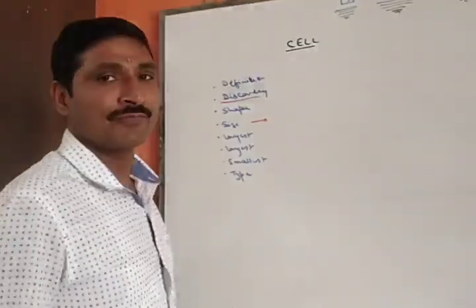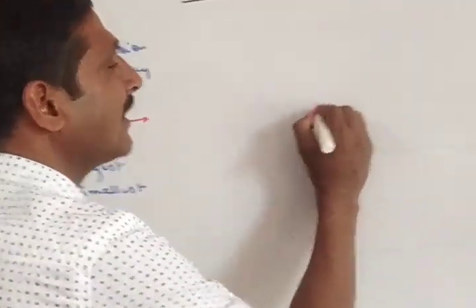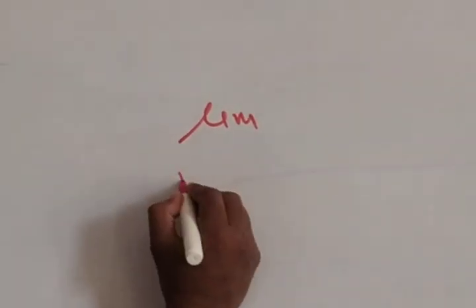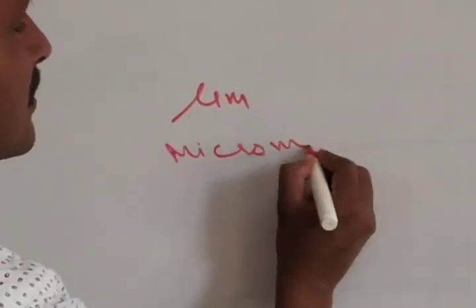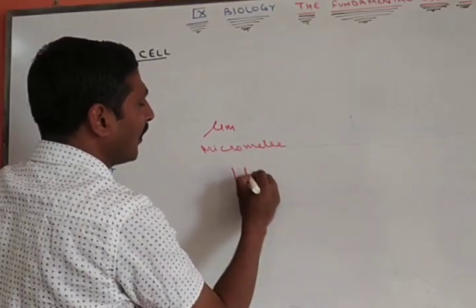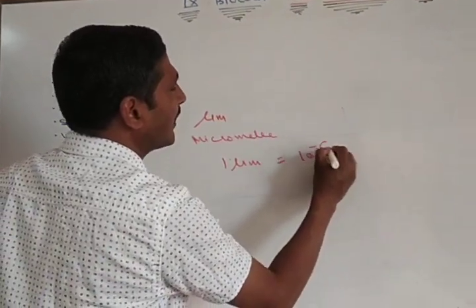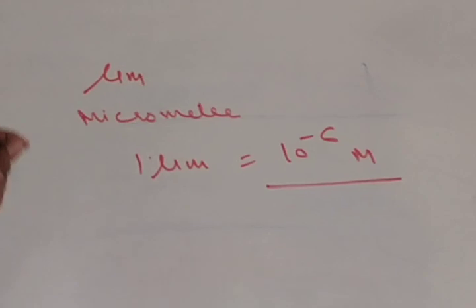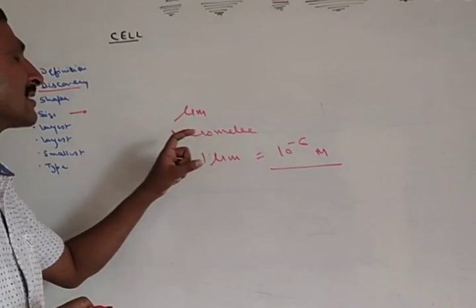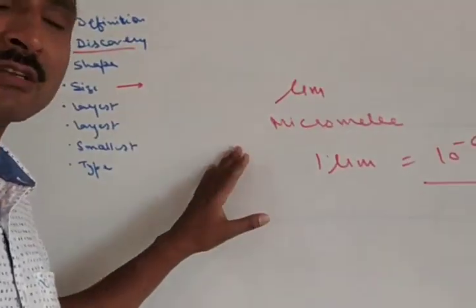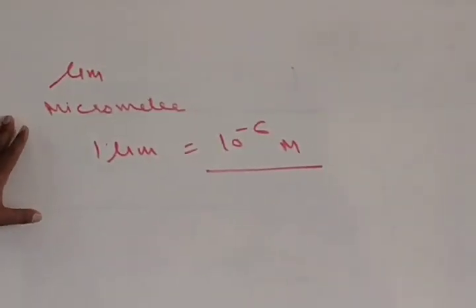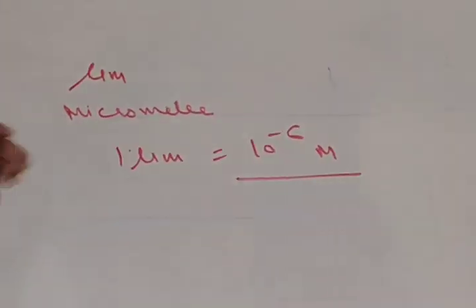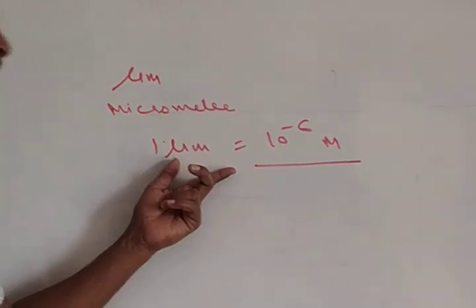Now, we come to size. What is the size of cell? Generally, the size of cell is measured in micrometer. You must be knowing that 1 micrometer is equal to 10 raised to power minus 6 meter. It is extremely small. So, cells are generally measured in micrometer. Sometimes their size is measured in picometer or nanometer too, but generally they are measured in micrometer.